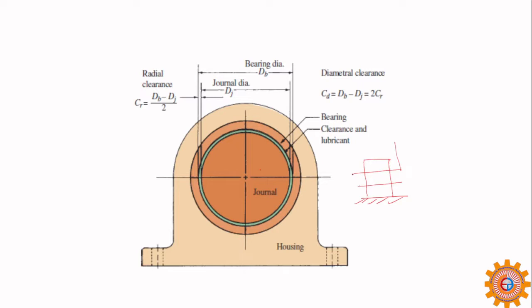This is the shaft, and the shaft is rotating. Inside there is the bush, and the shaft is also called the journal. The bearing bears the shaft, and for smooth operation or for reducing friction we select different types of metals like bronze. This is the bush, this is the bearing, and this is the clearance — which can also be used for lubrication.